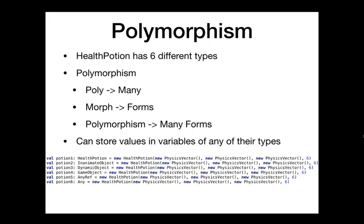This is where we get the word polymorphism from. Poly means many, morph means forms — so we have many forms. A HealthPotion can take on six different forms based on the six types it inherently is: HealthPotion masquerading as a DynamicObject, for example. Whenever we have those values in variables of different types, we're taking advantage of that polymorphism.